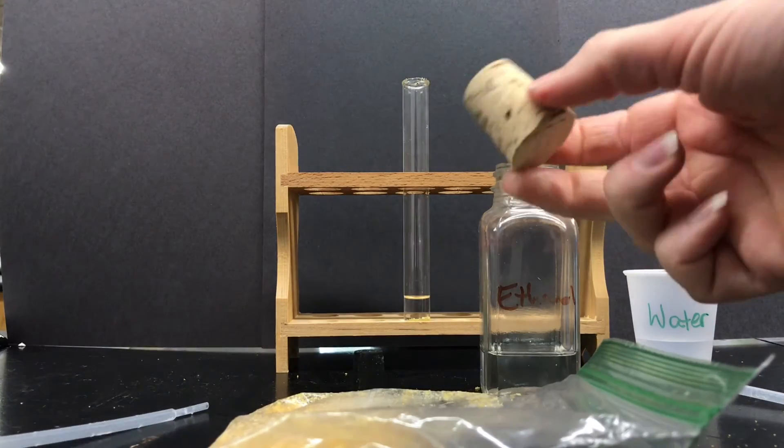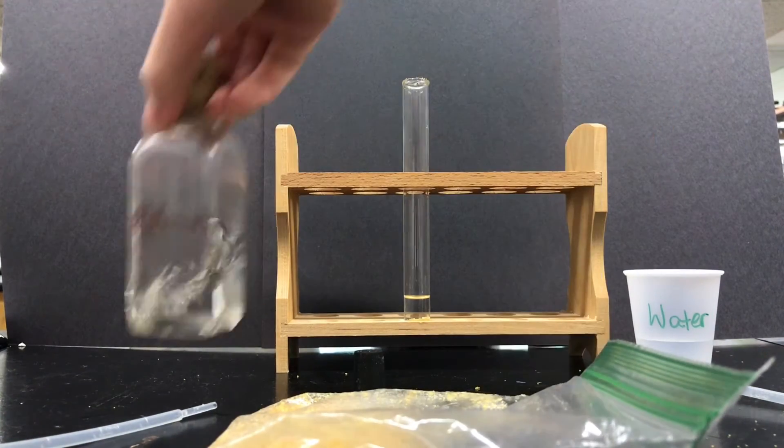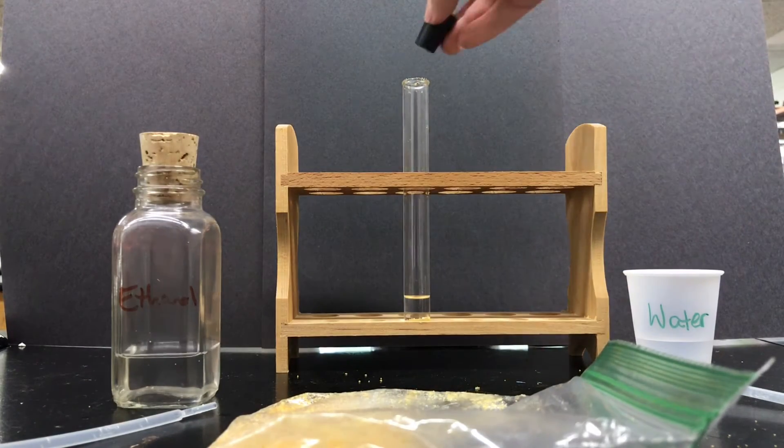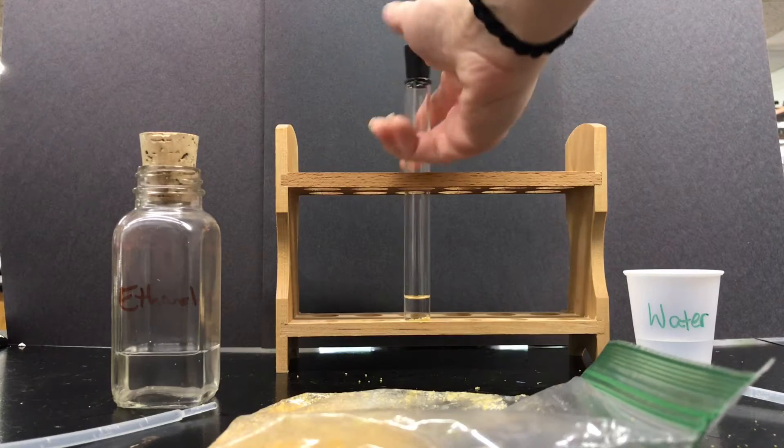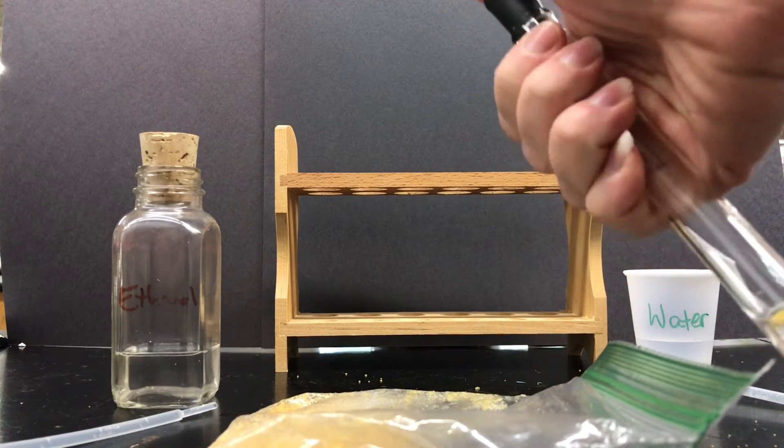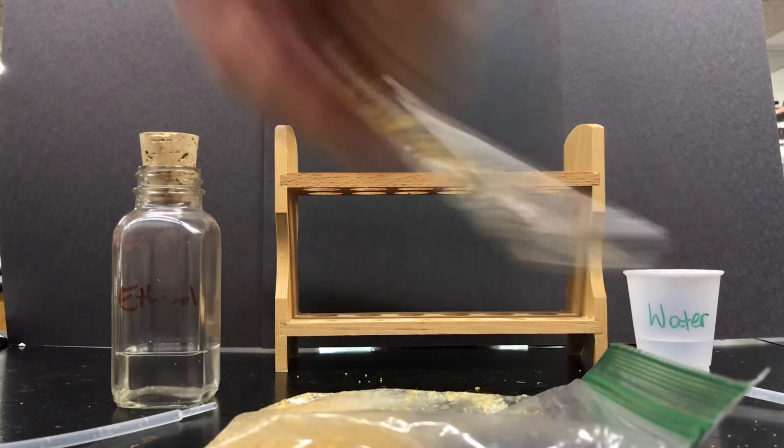good. Take the cork stopper place it back in the ethanol. Take your rubber stopper place it in the top of your test tube. Put your thumb on top of the test tube stopper and then we're going to shake